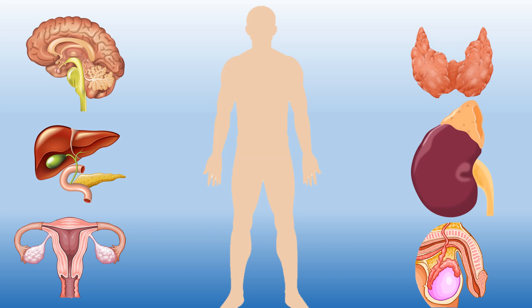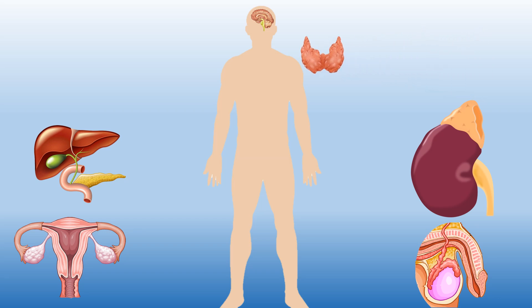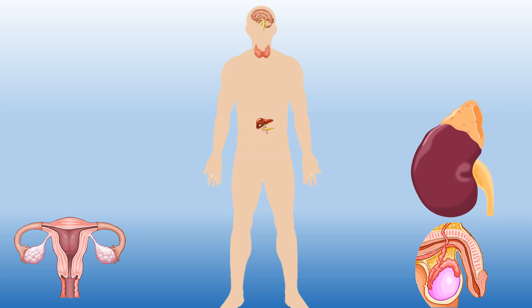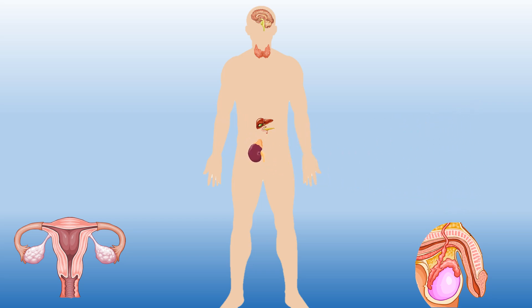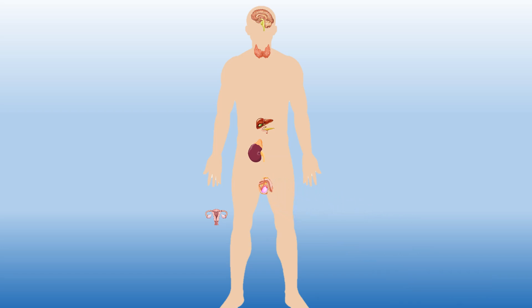Let us study the hormone-producing glands. Here is a figure showing which organs of the body produce hormones. The pituitary gland is located in the brain area. Next we have the pancreas, then the adrenal gland. This figure also indicates the ovary, which is the female reproductive organ, and the testes, which is the male reproductive organ.